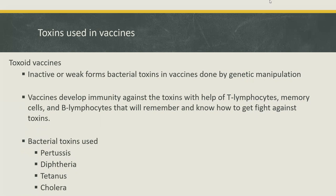These vaccines containing the bacterial toxin reduce the risk of disease by developing immunity against the toxin. Toxoid vaccines develop immunity by imitating an infection. This type of infection, however, almost never causes illness, but it does cause the immune system to produce T lymphocytes and antibodies. Sometimes after getting a vaccine, the imitation infection can cause minor symptoms such as fever. Once the imitation infection goes away, the body is left with a supply of memory T lymphocytes as well as B lymphocytes that will remember how to fight that toxin in the future.